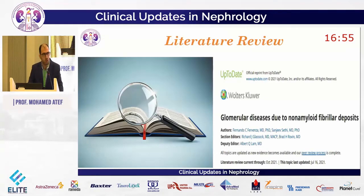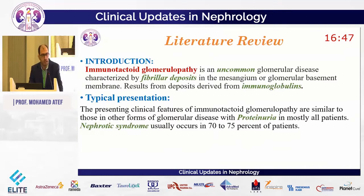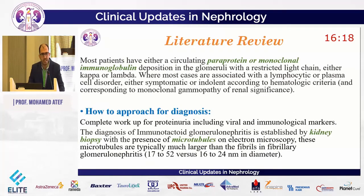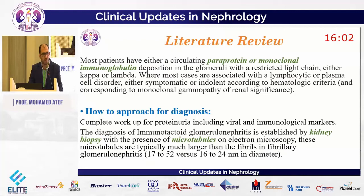Immunotactoid glomerulonephritis is one of the glomerular diseases due to non-amyloid fibrillar deposition. It is an uncommon glomerular disease characterized by fibrillar deposits in the mesangial or glomerular basement membrane resulting from deposition of immunoglobulins. The typical presentation is similar to other glomerular diseases, with proteinuria in most patients, and 70–75% of patients presenting with nephrotic syndrome. Usually the disease is related to a circulating paraprotein or monoclonal immunoglobulin with a selected light chain — either kappa or lambda — and most cases are associated with lymphocytic or plasma cell disorders that may be asymptomatic or indolent. This is called monoclonal gammopathy of renal significance.